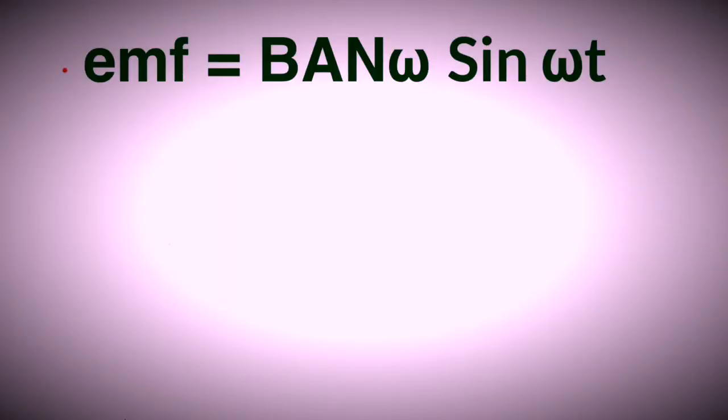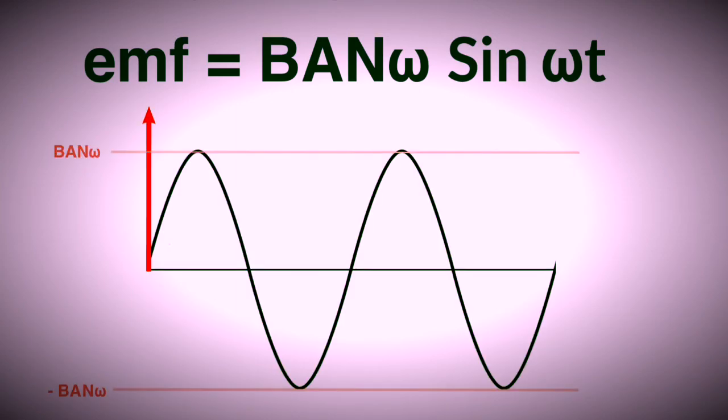So the EMF produced by a rotating coil is going to be equal to the magnetic field strength in the vicinity of the coil times the area of the coil times the number of turns in the coil times the omega rotation rate of the coil times the sine of ωt. It's basically a sine graph that is this tall. So this is like the amplitude of the sine graph.